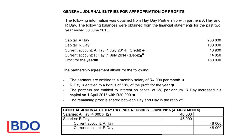The partners are entitled to a monthly salary of R4,000 per month. So R4,000 times 12 gives me $48,000. The salaries account will be debited to increase the expenses and the current accounts will be credited to show that the money is owed to the partners.